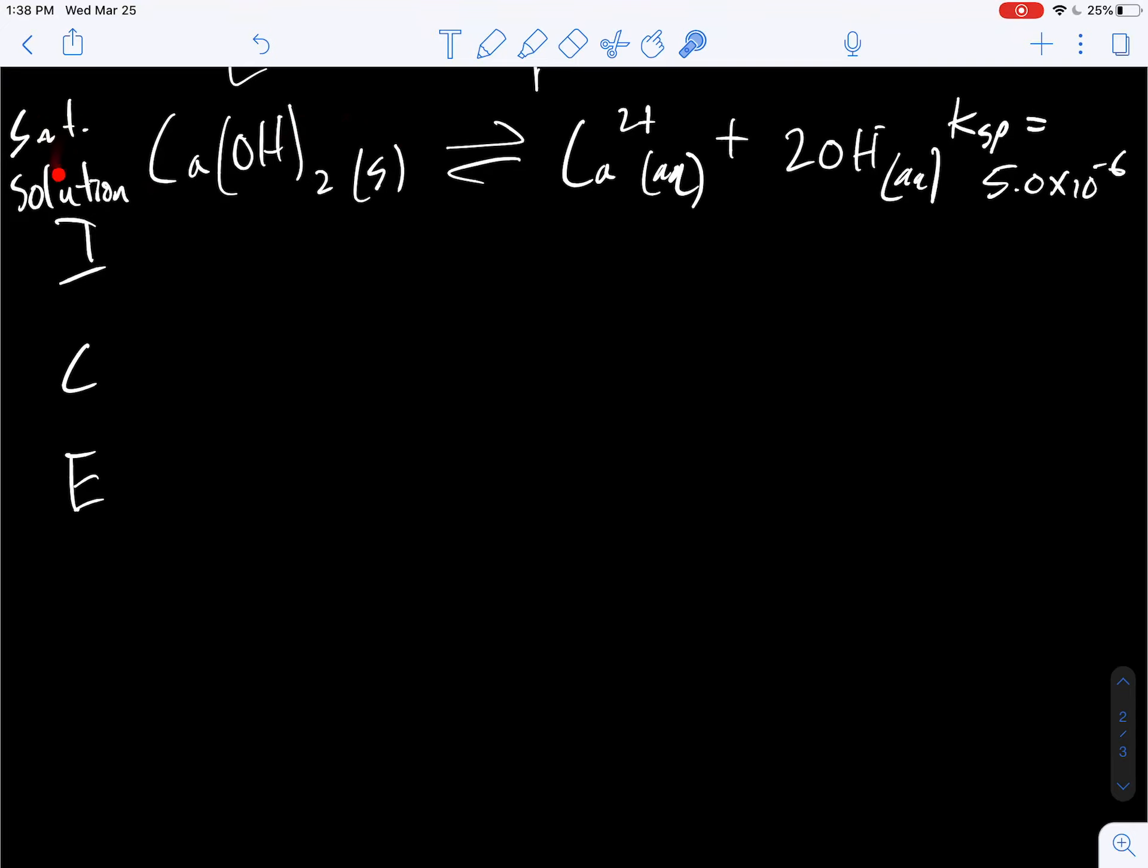We have, basically, an excess of this. A maximum amount is dissolved. So I'm just going to jot that in. And initially, before we reach equilibrium, we have zero of these.